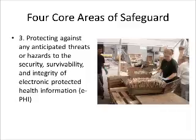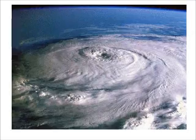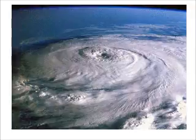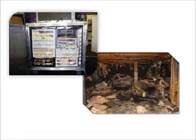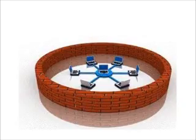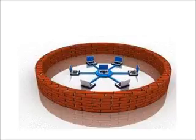Number three of the four core areas: protecting against any anticipated threats or hazards to the security, survivability, and integrity of electronic protected health information. Think about Hurricane Katrina — it's an example of what can happen when medical records are destroyed by natural disasters. Many of the records in hospitals and medical systems in those areas were not backed up and so were lost forever. Now with electronic protected health information and the HIPAA Security Rule, this information must be protected and preserved.